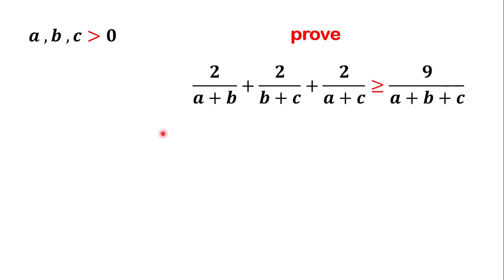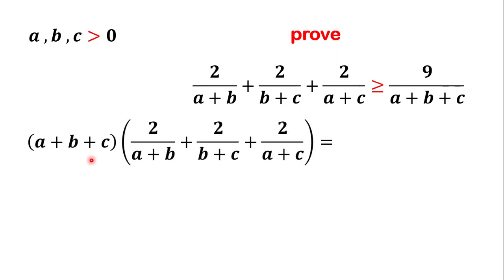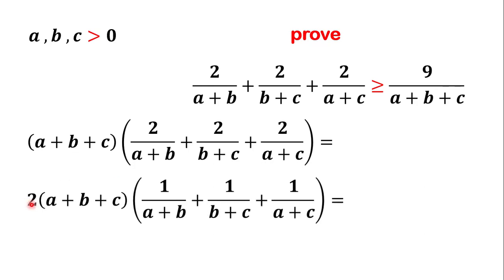In the first step to solve this problem, we can multiply these three fractions by (a+b+c). Then we can factor out 2 from these three fractions and bring out the 2 to the front, giving us 2 times (a+b+c) times the quantity 1 over (a+b) plus 1 over (b+c) plus 1 over (a+c).